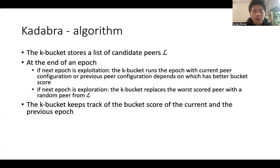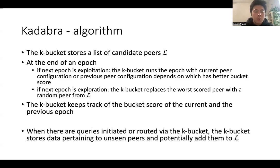The K-bucket keeps track of the bucket score of the current and the previous epoch. When a query is initiated or routed via the K-bucket, the K-bucket stores data pertaining to unseen peers and potentially adds them to the candidate list.